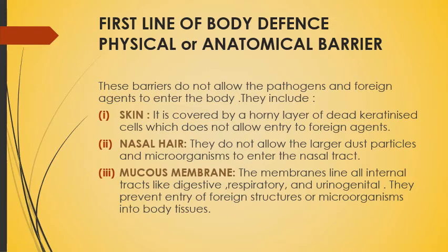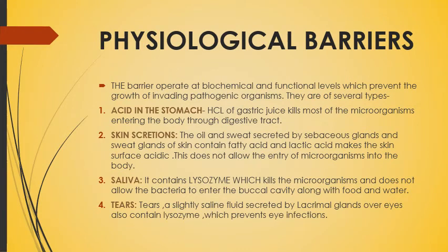Next are physiological barriers. These work at biochemical and functional levels to prevent the growth of invading pathogenic organisms. In physiological barriers there will be some biochemical substances — some enzymes and secretions — that will trap microorganisms. Number one is acid in the stomach. Suppose you have eaten something and there are microorganisms in the stomach. The HCl of the gastric juice will kill the microorganisms and make your body free from infection.